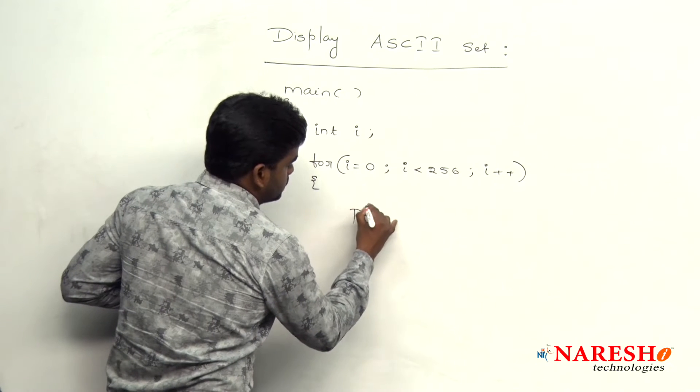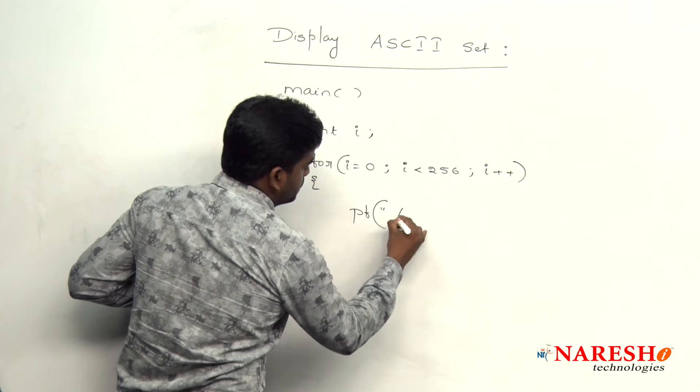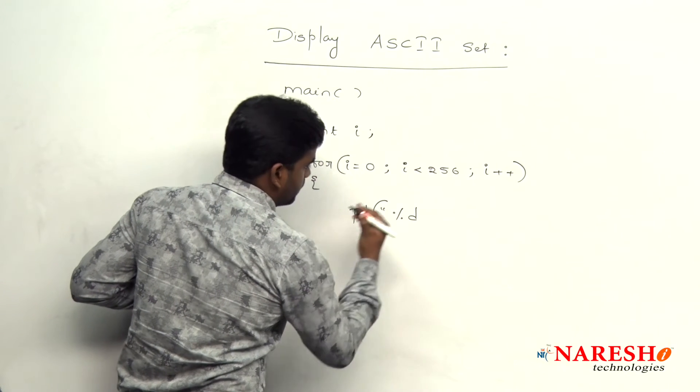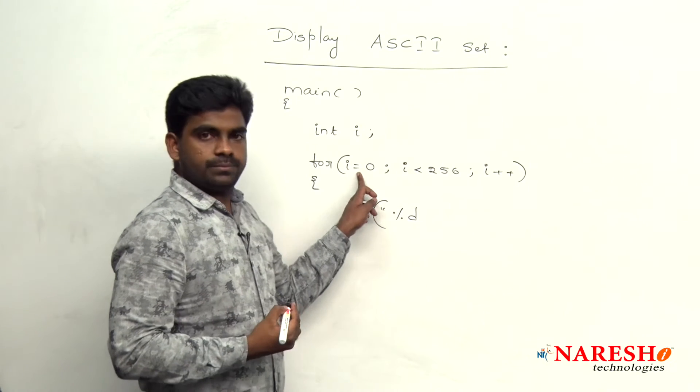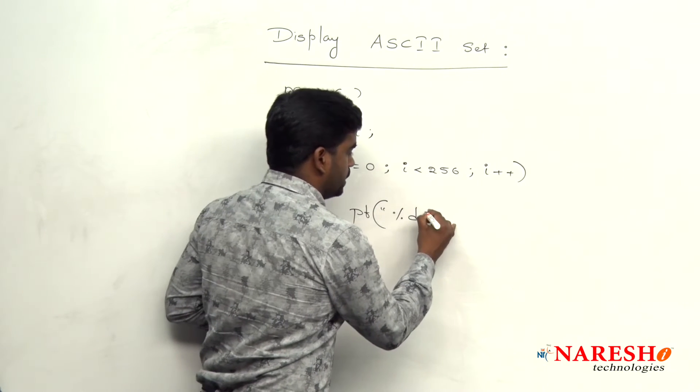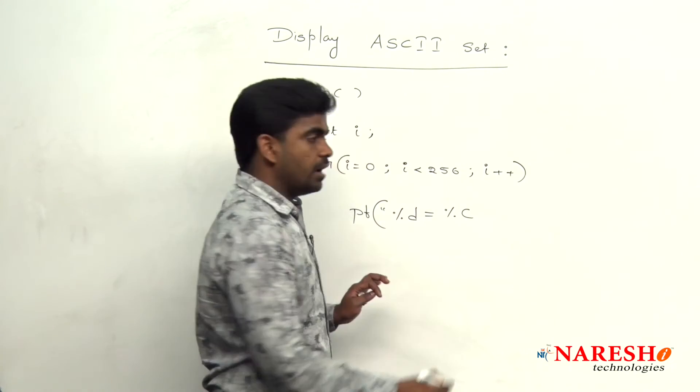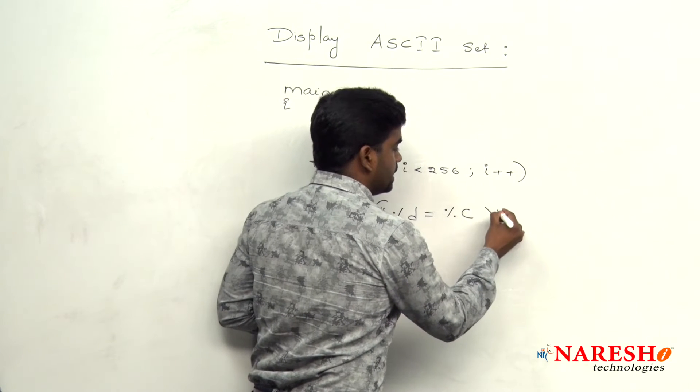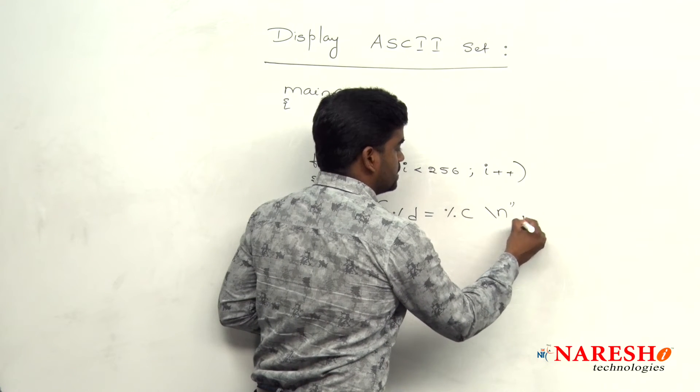So, simple formatting just printf first percentage d is nothing but value equal to corresponding character. After that I just want to send the control to next line slash n.